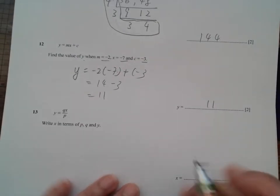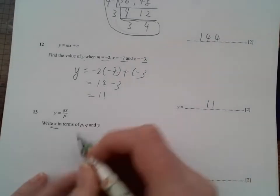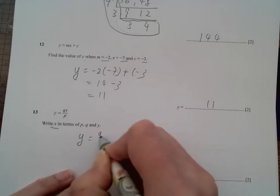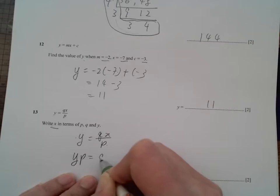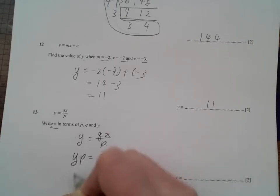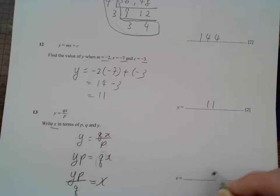Write it down, we're going to change the subject to x. So you have y equals to qx over p, throw it to the other side. yp equals to qx. And so we have multiply, put it at the other side, we got divide.